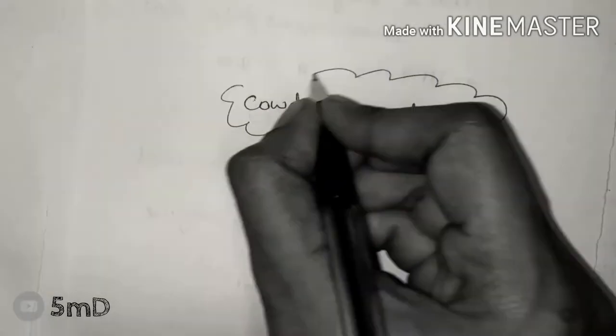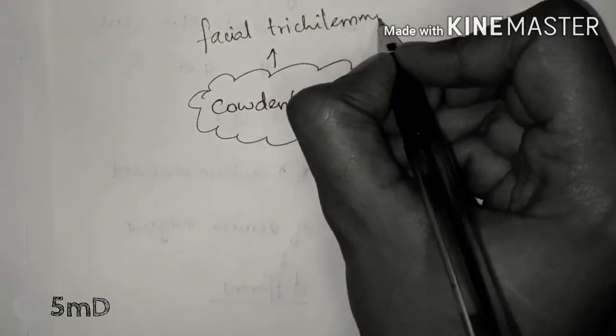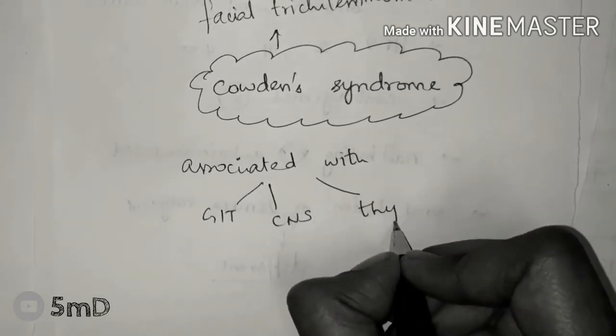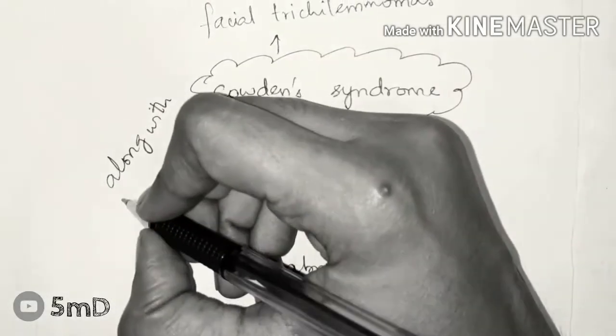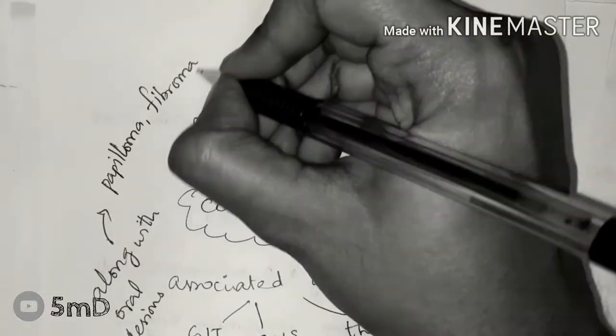There is a syndrome associated with papilloma which is known as Cowden syndrome. It includes symptoms of facial trichilemmomas along with GIT, CNS, and thyroid abnormalities. The oral lesions including papilloma and fibroma are seen in Cowden syndrome. It is a cutaneous marker of breast tumor commonly.